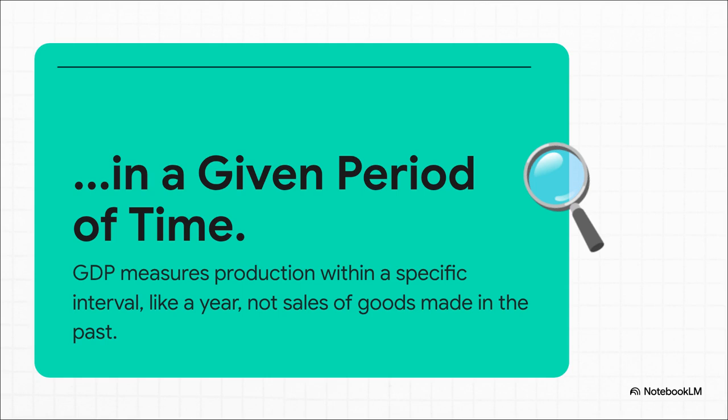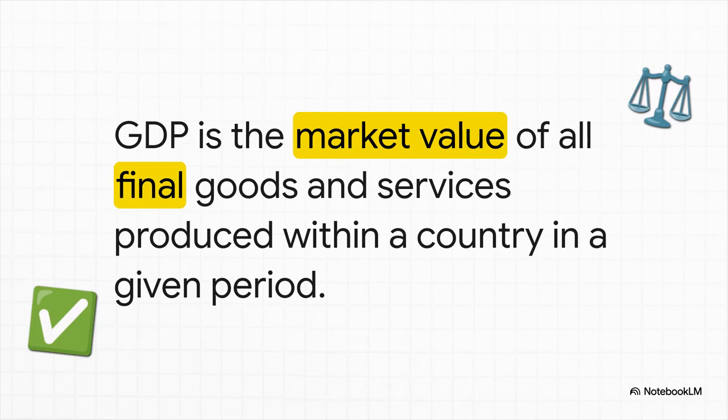The last piece of our definition: "in a given period of time." GDP isn't a snapshot of a country's total wealth — it's a flow. It's like measuring how much water is flowing through a pipe over a specific period, usually a year or a quarter. We're only counting goods and services produced right now. If you sell your used car from 2018, that transaction doesn't get added to this year's GDP, because its value was already counted back in 2018 when it was first made. So: GDP is the market value of all final goods and services produced within a country in a given period of time.